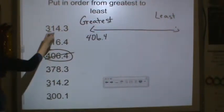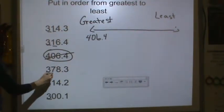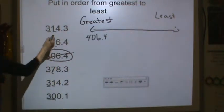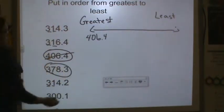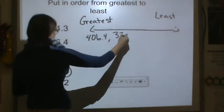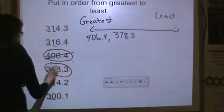All right, now I'm going to go to the tens place. So I've got a 1, a 1, a 7, a 1, and a 0. Well, 7 is bigger than all of those numbers, so my next number is 378 and 3 tenths. Done.